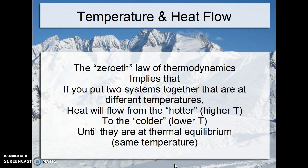How does heat flow? There's a zeroth law of thermodynamics — it was one that was added to the list of three laws of thermodynamics. It says that if you put two systems together that are at different temperatures, heat will flow and always flow from the higher temperature object to the lower temperature object until they are at thermal equilibrium — that is, until they have the same temperature.